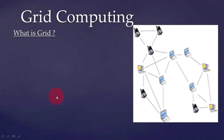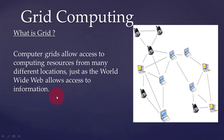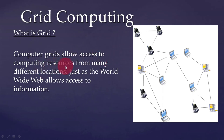Computer grids allow access to computing resources. Resources include RAM, processor, sensors, data servers, graphics cards, storage, etc. The grid allows access to all these resources from many different locations, just as the World Wide Web allows access to information.